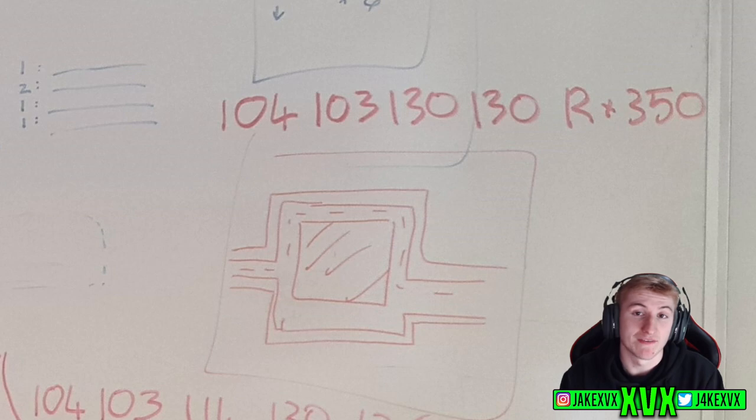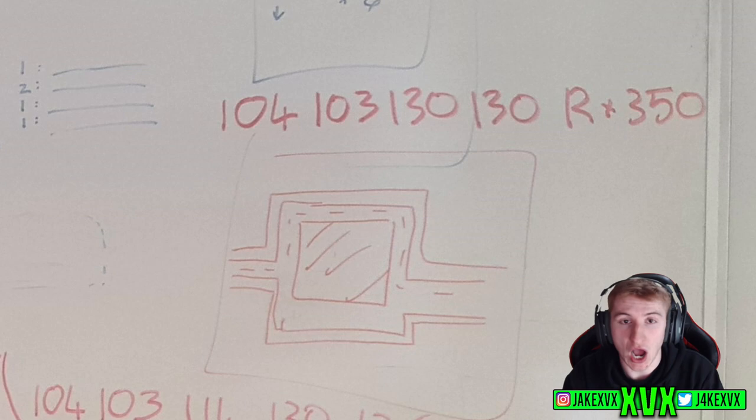Now if we go a bit further down we have even more numbers. We have 104, 103, 130, 130 and then R times 350.